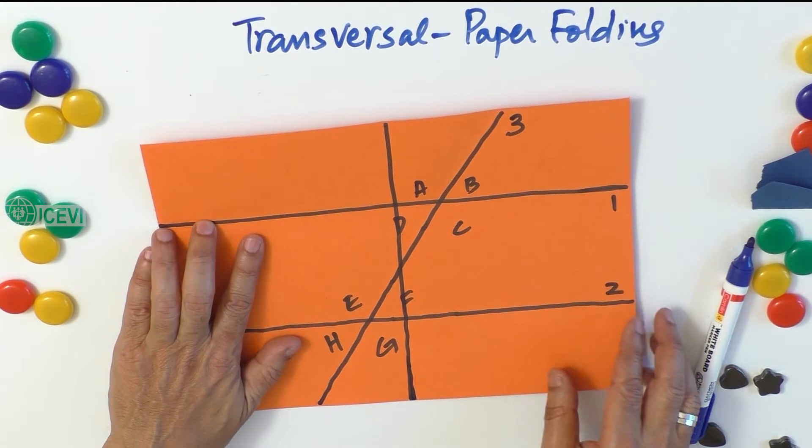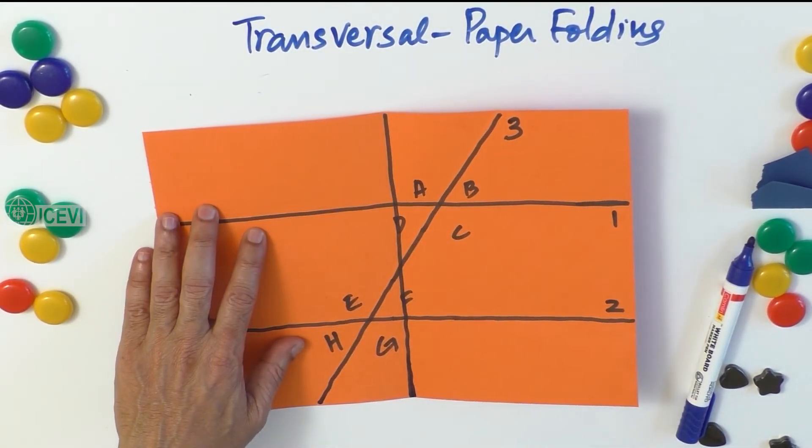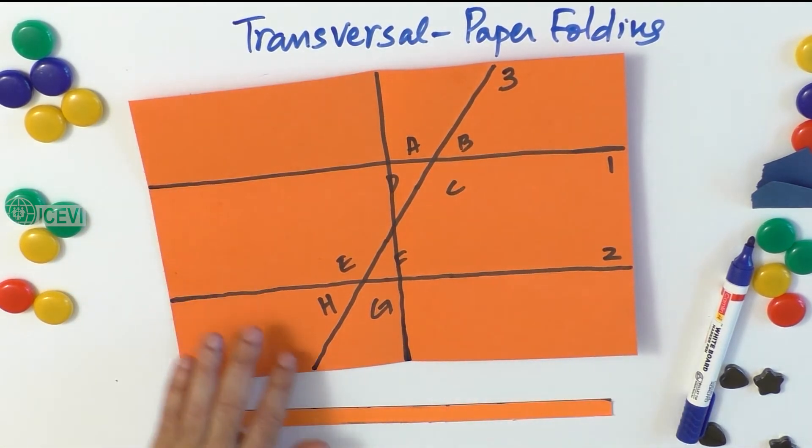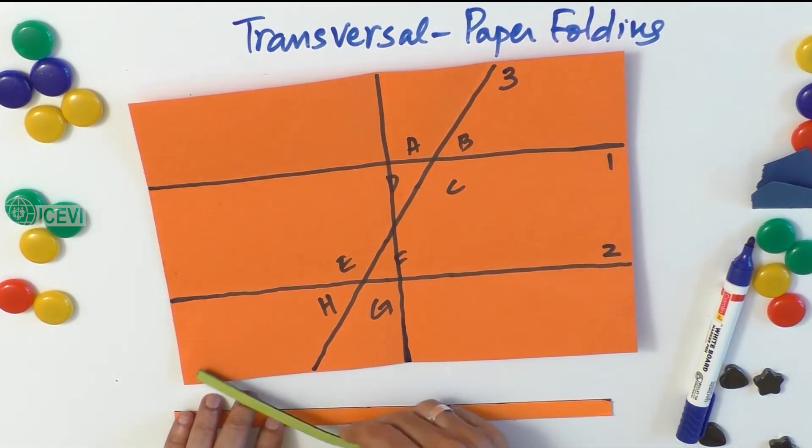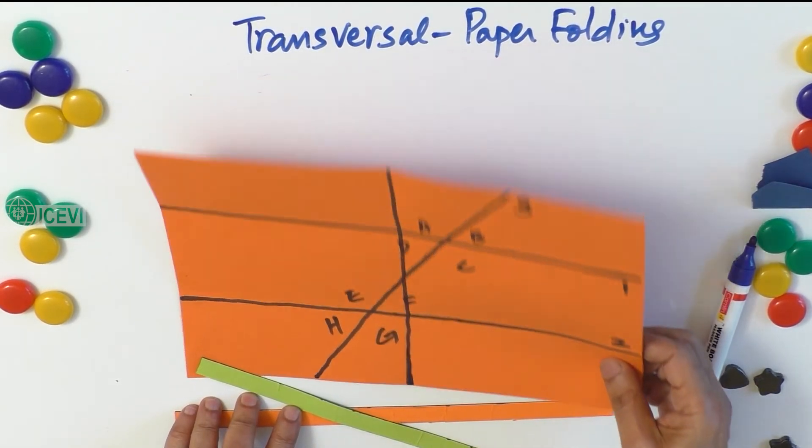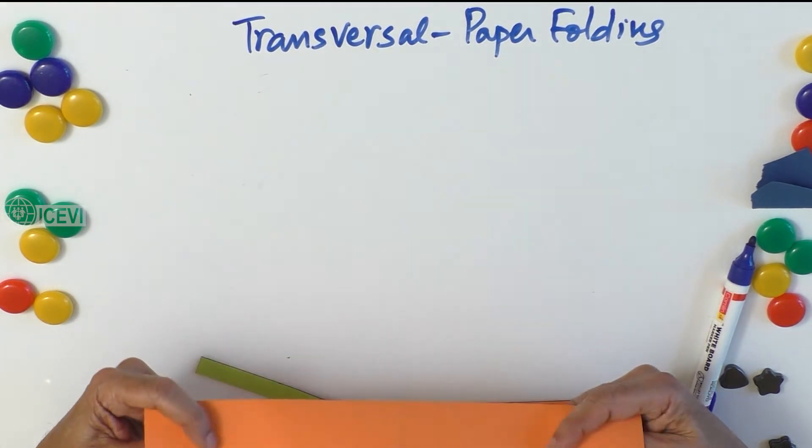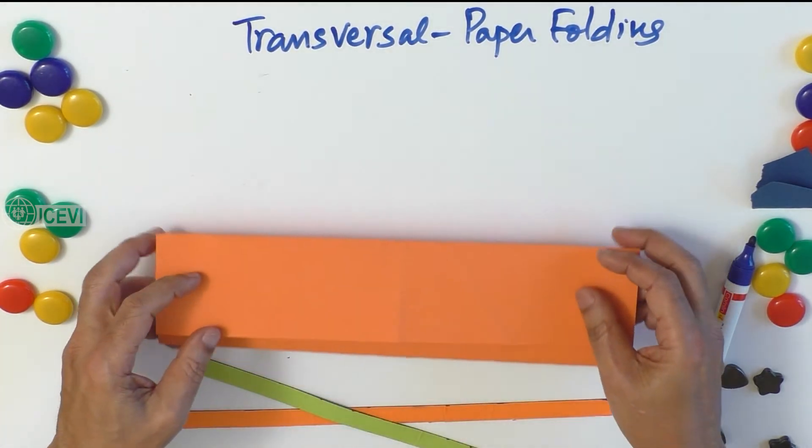So you can use either magnetic strips, which are good to explain the concept of transversal and intersecting lines. And at the same time, you can use paper folding too. Well, visually, it may look attractive with the use of magnetic strips.